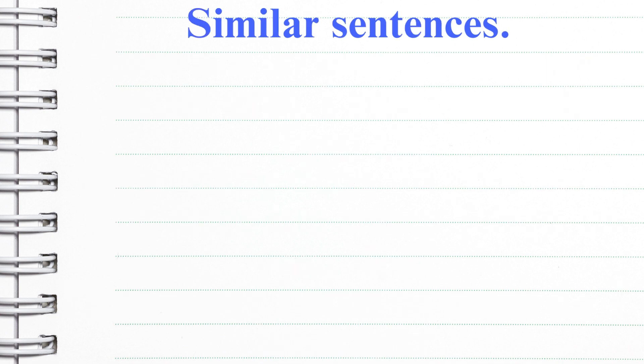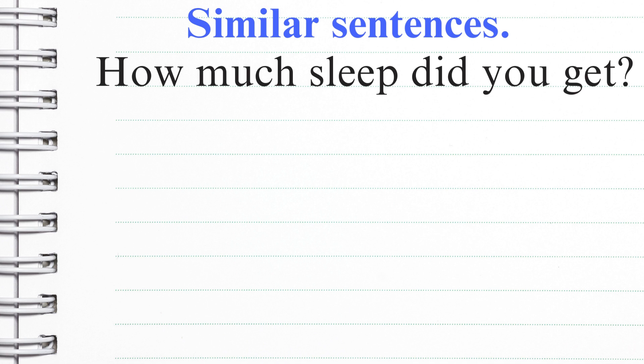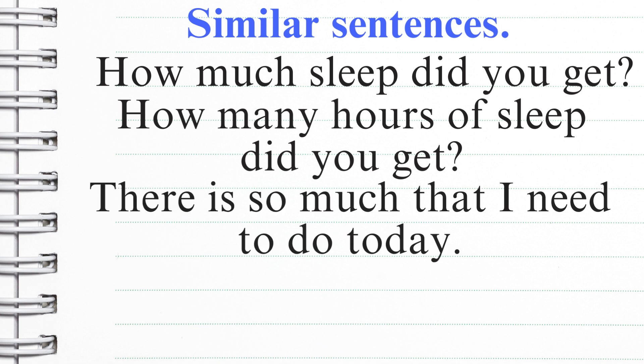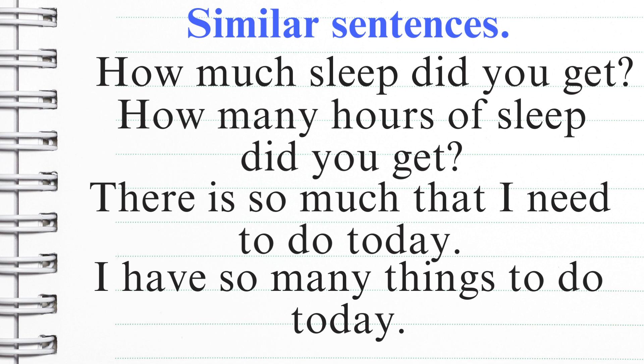It's important to show similar sentences where we swap out the words. For instance, 'how much sleep did you get?' versus 'how many hours of sleep did you get?' — you're still asking about the quantity of sleep that person got. Likewise, 'there is so much that I need to do today' versus 'I have so many things to do today.' All these sentences are correct; they're just worded differently.